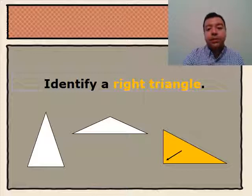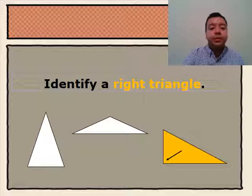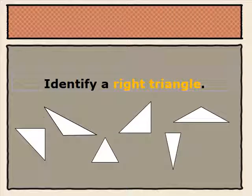If a triangle has a right angle, then it is a right triangle. Now take a moment to identify the right triangles in the group of triangles below. These two triangles are right triangles. We know that they are right triangles because each of them has a right angle.